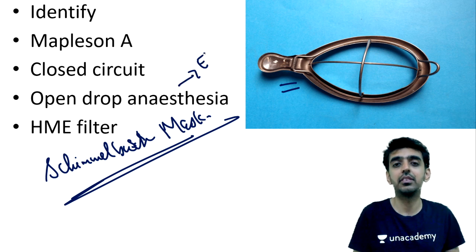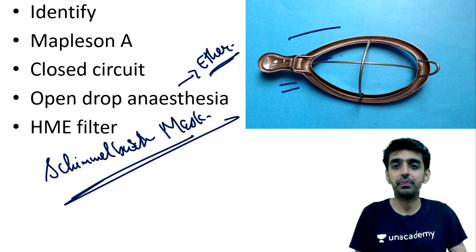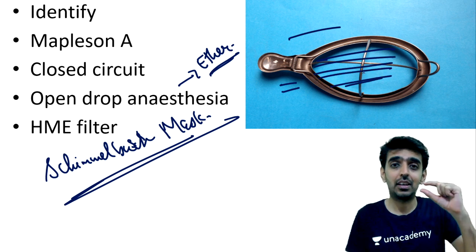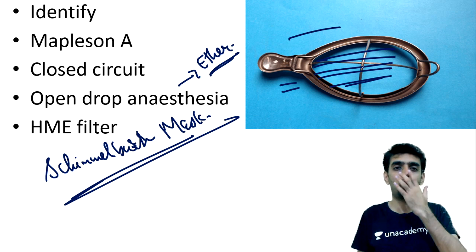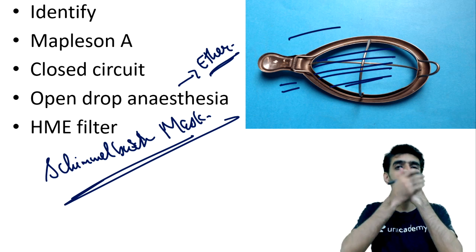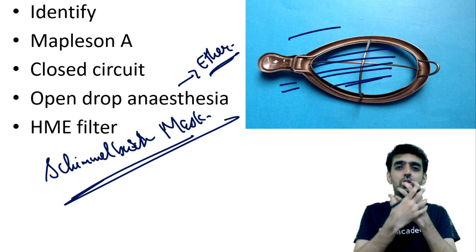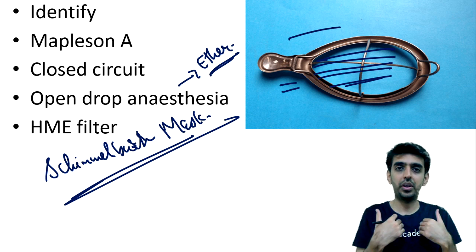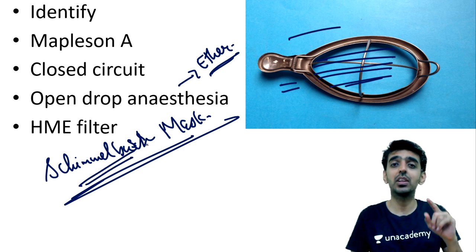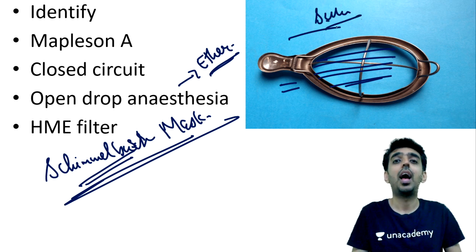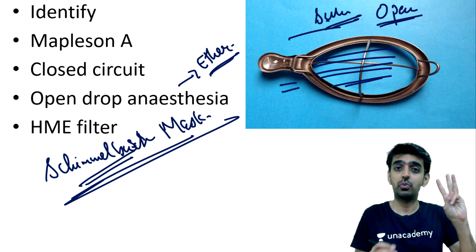The Schimmelbusch mask was used to give ether anesthesia in earlier days. On top of the mask there is a 16-gauge cloth gauze placed over it, and ether was dropped drop by drop onto the gauze. The patient breathes atmospheric air mixed with ether vapors. This is known as the open drop technique, and the mask used is the Schimmelbusch mask. This method falls under the open system of anesthesia circuits.